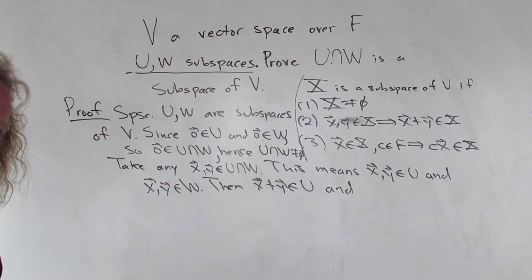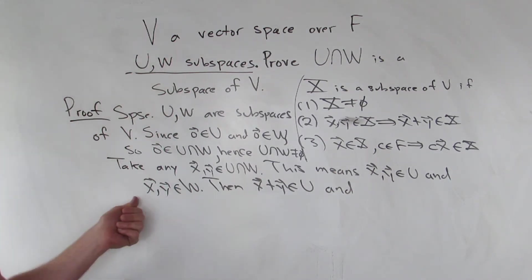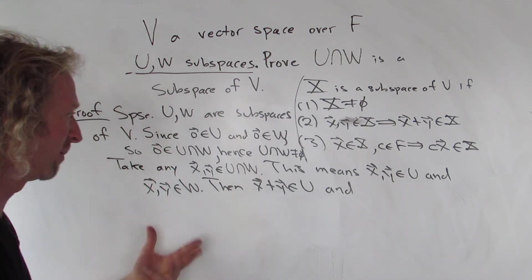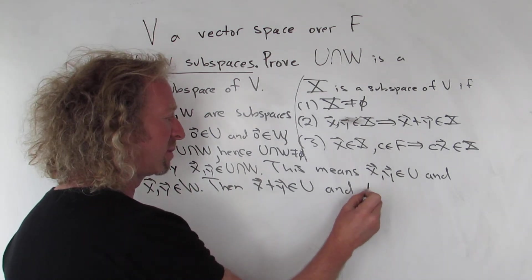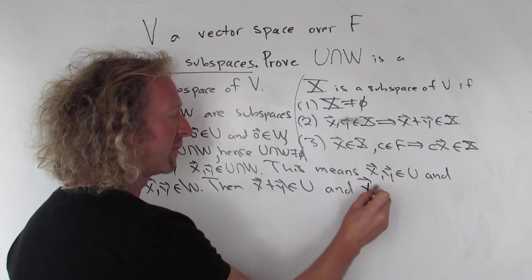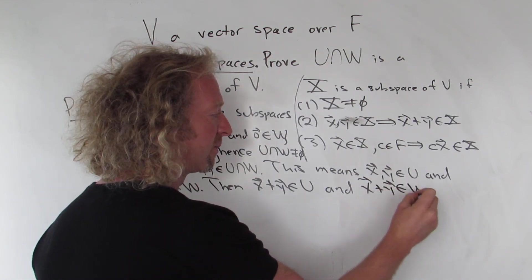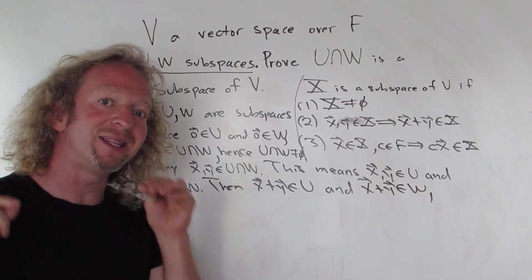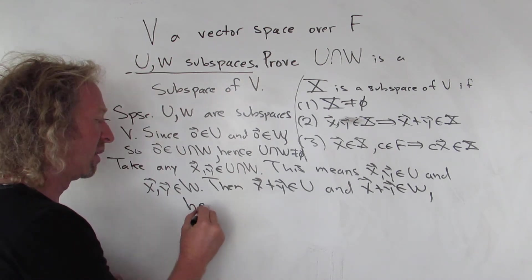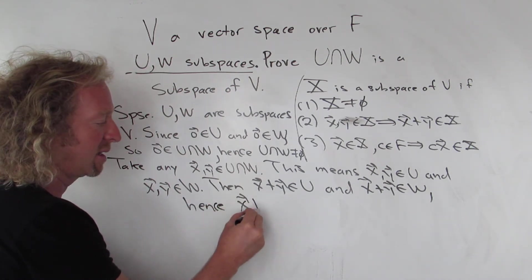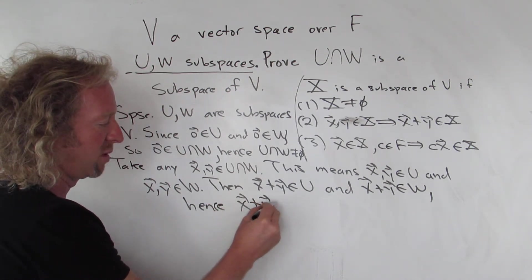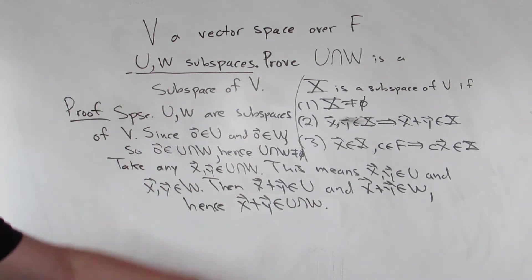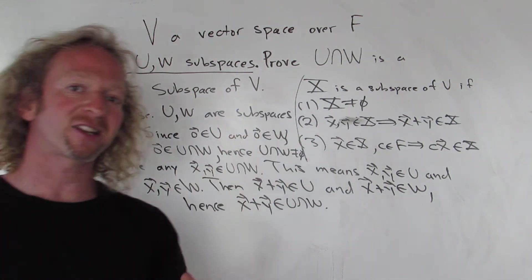Likewise, W is a subspace, so it's closed under addition. X and Y are vectors in W, so the sum is also in W — X plus Y is in W. That's precisely what it means for X plus Y to be in the intersection. Hence, X plus Y is in the intersection, showing it's closed under vector addition.